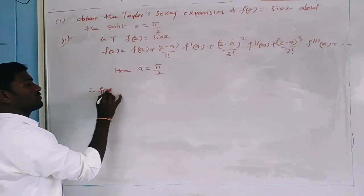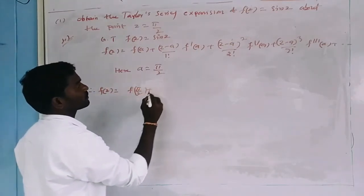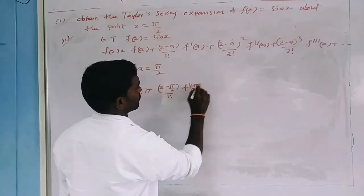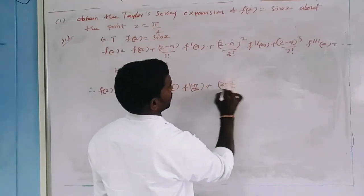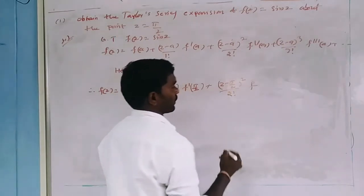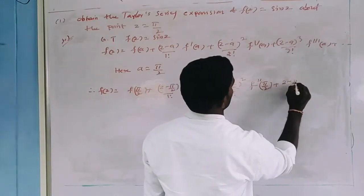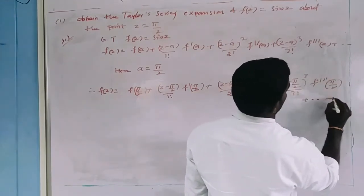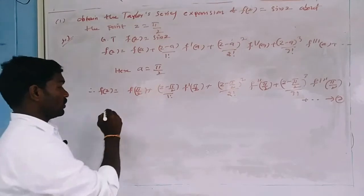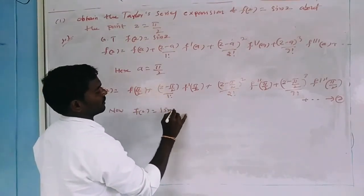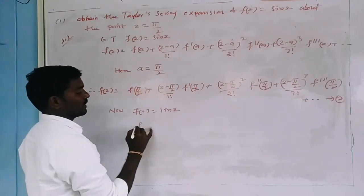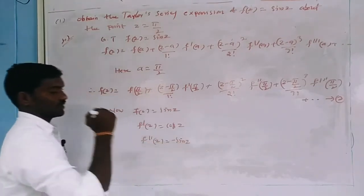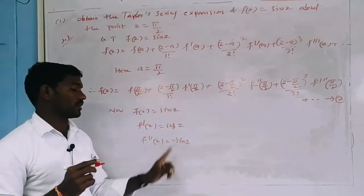Therefore F of Z equals F of pi by 2, plus Z minus pi by 2 by 1 factorial into F-dash of pi by 2, plus Z minus pi by 2 whole square by 2 factorial into F-double-dash of pi by 2, plus Z minus pi by 2 whole cube by 3 factorial into F-triple-dash of pi by 2, plus and so on. This is called equation 2. Now, F of Z equals sin Z. Differentiating: F-dash of Z equals cos Z, F-double-dash of Z equals minus sin Z, and the differentiation of cos Z equals minus sin Z, so F-triple-dash of Z equals minus cos Z.